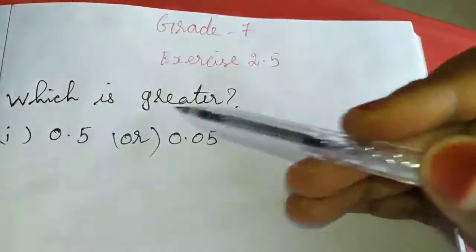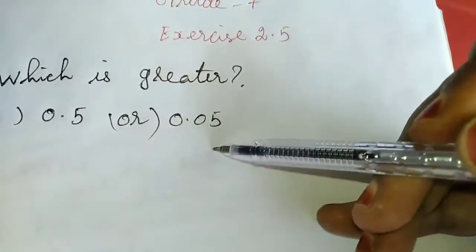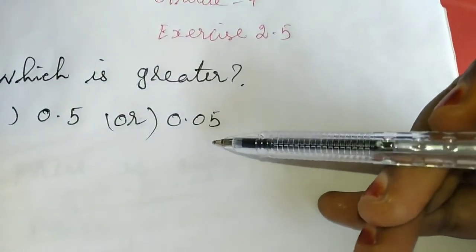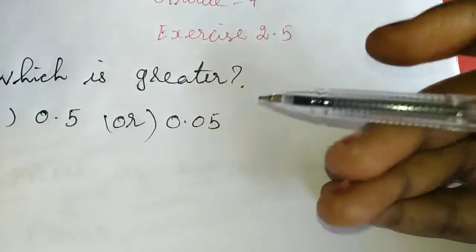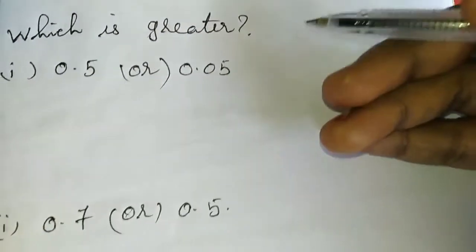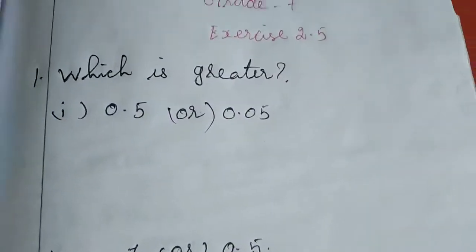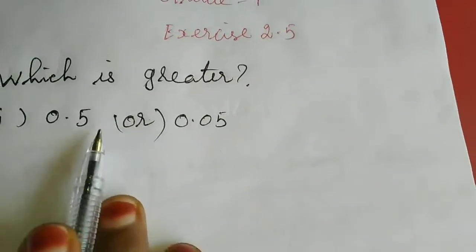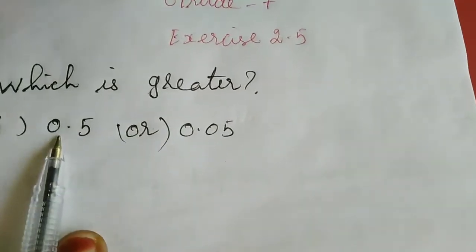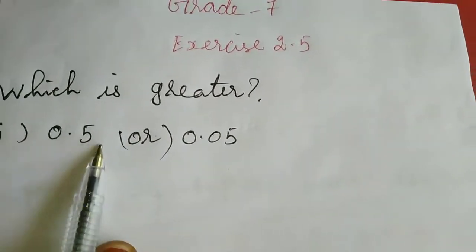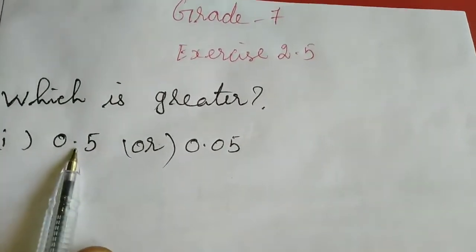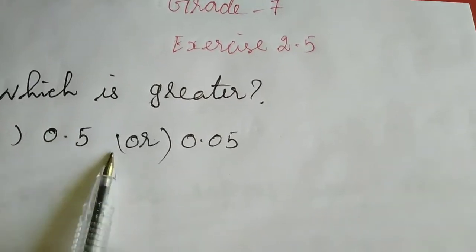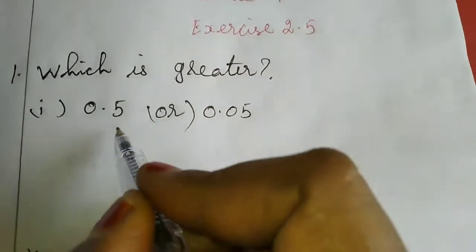The first sum is: which is greater? They gave two decimal numbers and we want to tell which one is greater. While comparing decimals, the decimals want to be like decimals — that means the number of digits after the dot, we want to equalize. See here.